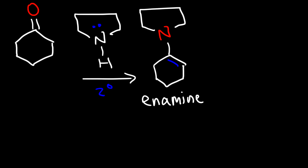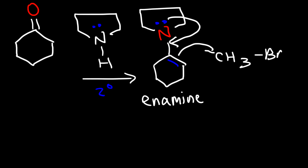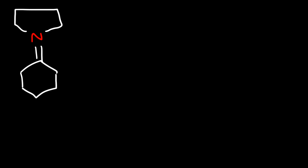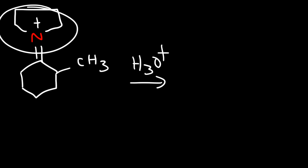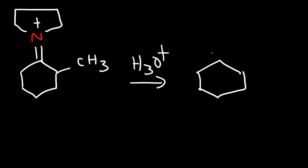There's a lot that we can do with this particular intermediate. We can alkylate the enamine by reacting it with an alkyl halide. The nitrogen will use its lone pair to form a pi bond, causing this double bond to attack the methyl group and expel the bromide ion. Right now we have an iminium ion — the nitrogen has a positive charge but we've added a methyl group. In the next step we add H2O+ to get rid of the nitrogen group, regenerating the ketone. That's the alkylation of ketones using an enamine as an intermediate.